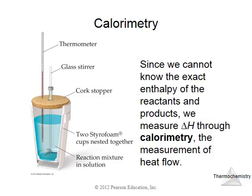Calorimetry allows us to determine how much heat is given off or absorbed in a chemical reaction. The reaction is carried out in a container surrounded by water. As the reaction happens, if heat is given off, the water absorbs it and its temperature rises. From the temperature change, multiplied by mass and specific heat, we can calculate how much heat was involved.